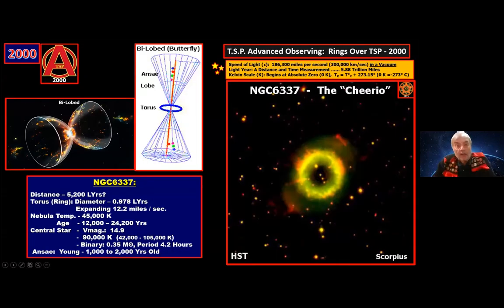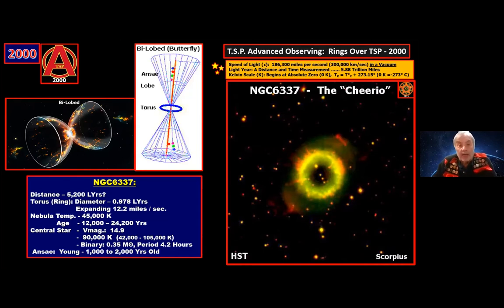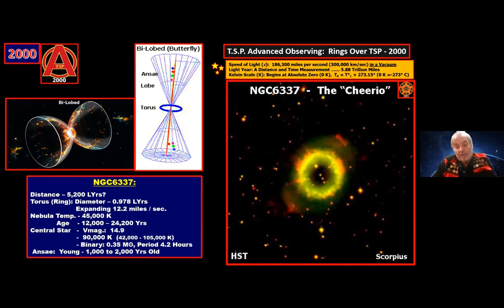One of the first objects on the list is NGC 6337, which we call the Cheerio because it looks like a Cheerio cereal piece — basically a donut shape. This is a planetary nebula — a star that is in the act of dying. The speed of light travels at 186,300 miles per second, or 300,000 kilometers per second in a vacuum. A light year is how far light travels in one year — just under six trillion miles — and is both a distance and a time measurement.